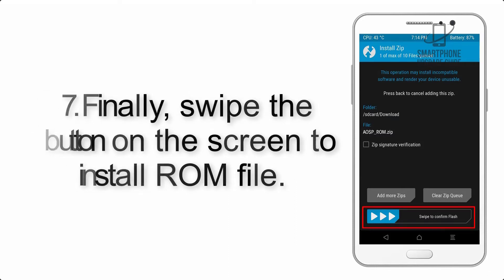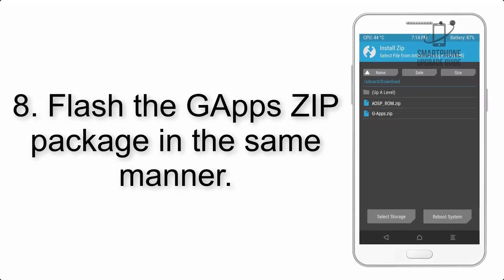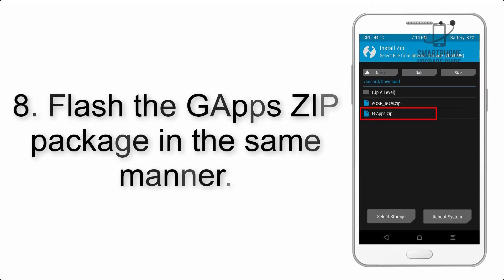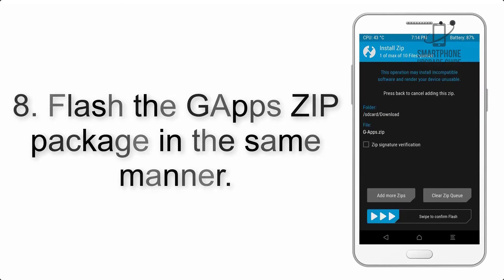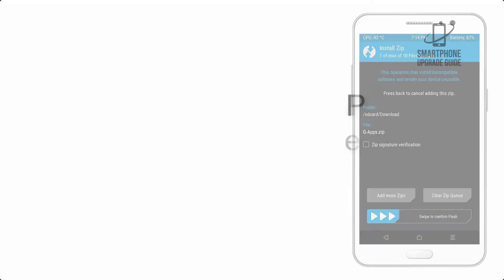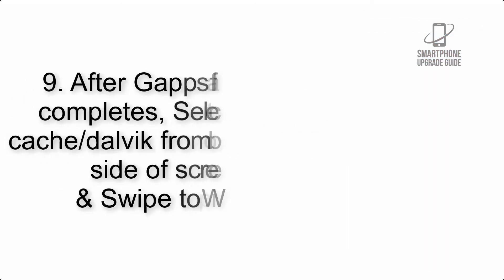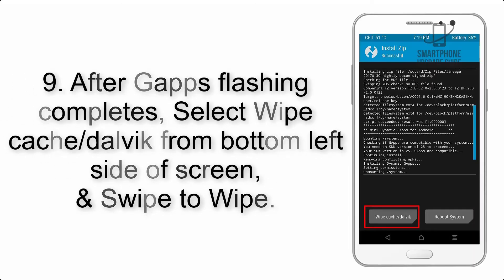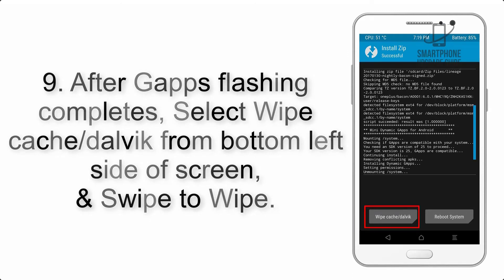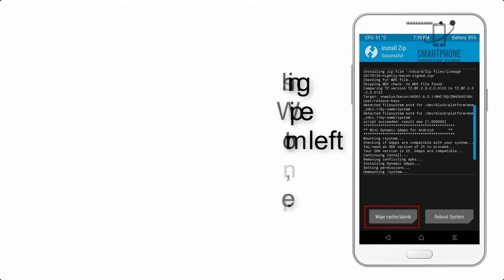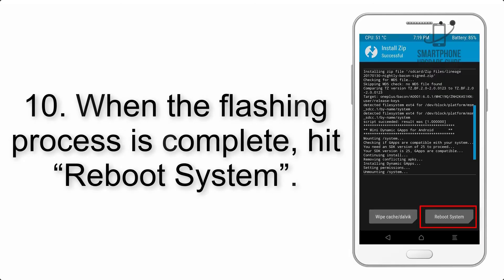Step 8: Flash the GApps zip package in the same manner. Step 9: After GApps flashing completes, select Wipe Cache and Dalvik from the bottom left side of the screen and swipe to wipe. Step 10: When the flashing process is complete,